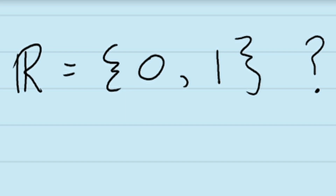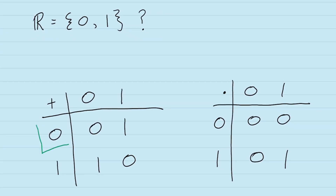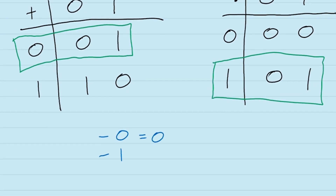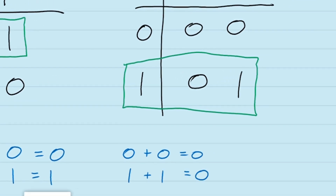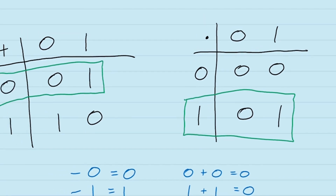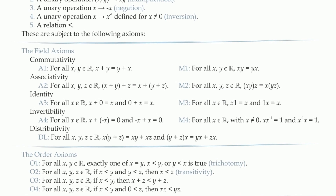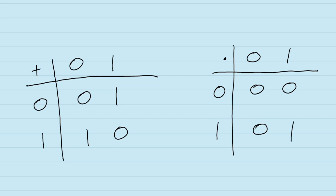It's interesting to note that you can have a number system consisting of only 0 and 1, if the addition and multiplication tables look like this. Anything plus 0 is itself, and anything multiplied by 1 is itself. Every number has a negative — the negative of 0 is 0, and the negative of 1 is 1, because in this case 1 plus 1 is equal to 0. Both addition and multiplication in this number system are also commutative and associative, and multiplication does distribute over addition. This means that the first nine axioms of the real numbers — the field axioms — are all satisfied by this number system, and yet this number system consists of only the numbers 0 and 1.